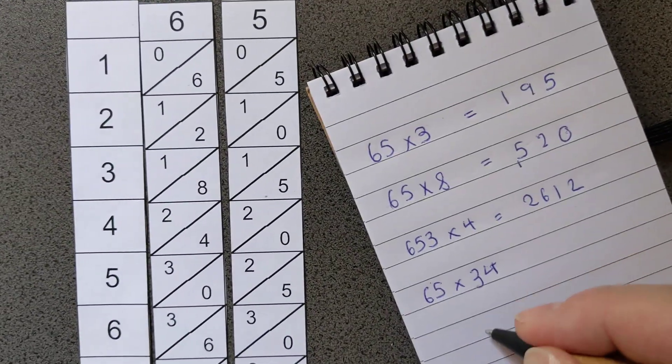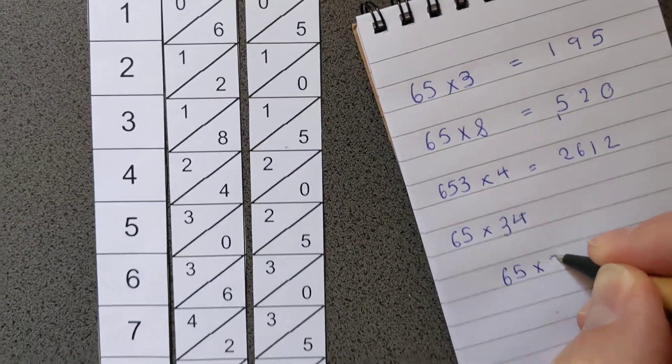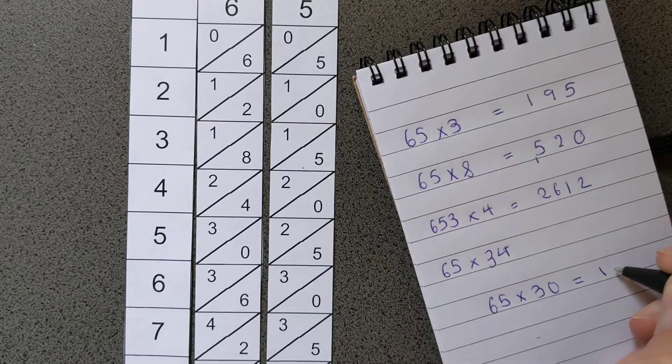But so 65 times 30 is 10 times as much, isn't it? So 65 times 30 is going to be 1950.